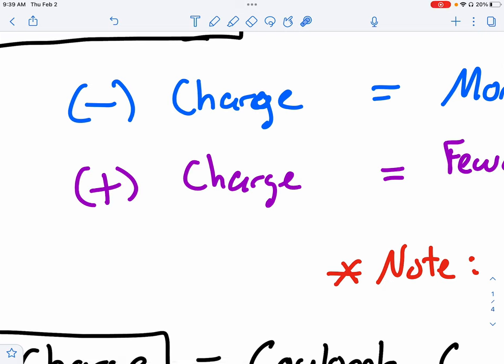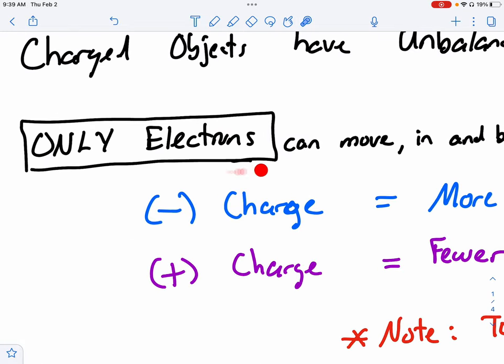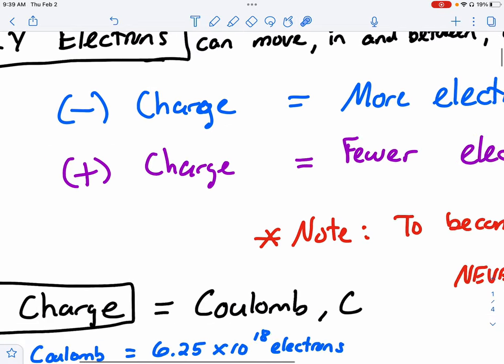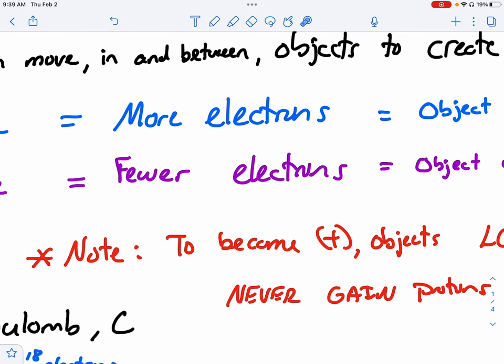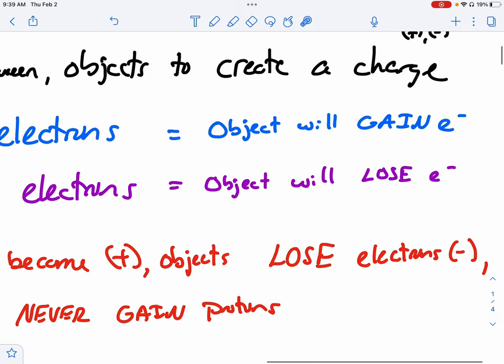Now remember, positive charges are protons and they're locked in place inside that nucleus. They cannot move. The charge carriers are only electrons. Therefore, to make a positive charge, we have to have fewer electrons. Therefore, the object will lose electrons to become positive.